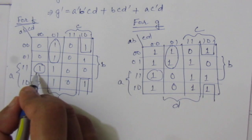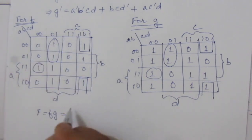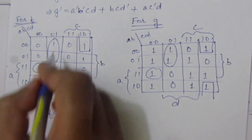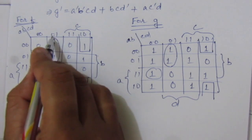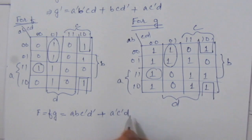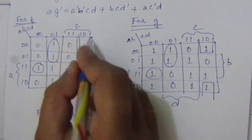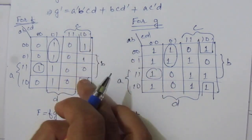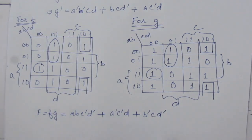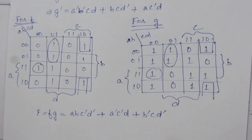From the first common group we get a·b·c-bar·d-bar, and from the second common group we get b-bar·c·d-bar. So the simplified sum of product expression is: F = a·b·c-bar·d-bar + b-bar·c·d-bar. Thank you for watching. If you have any questions, please put them in the comment section below. Also like, share, and subscribe to my channel.